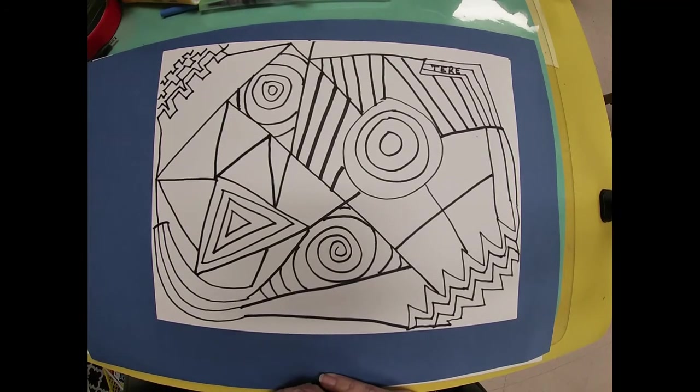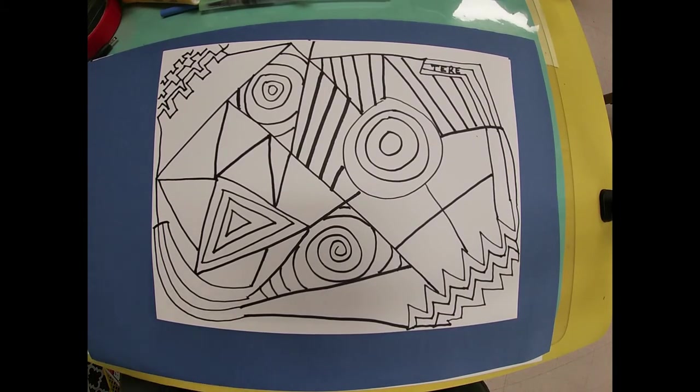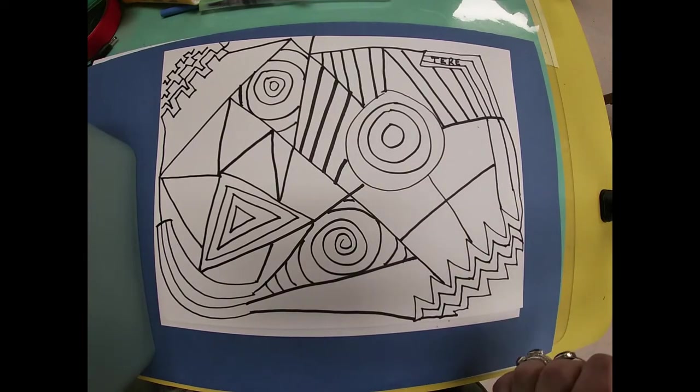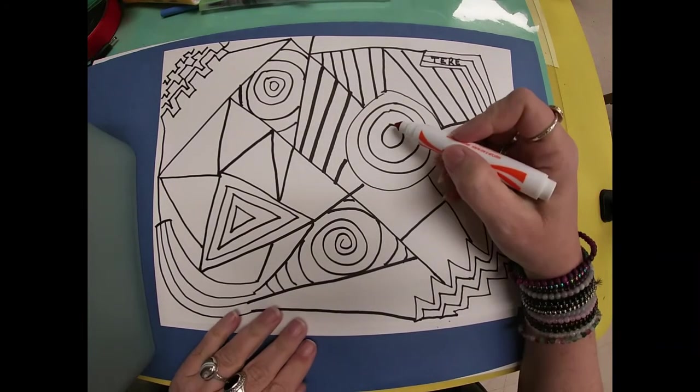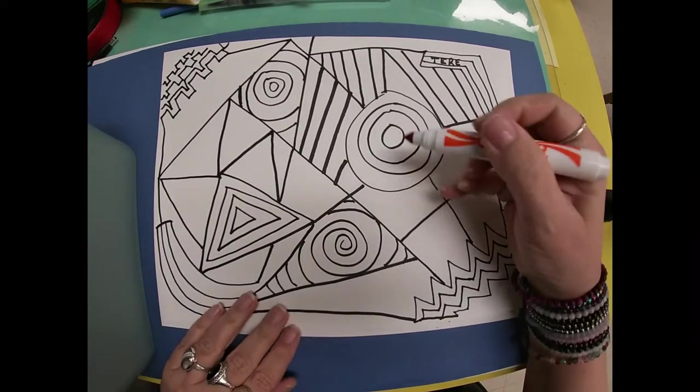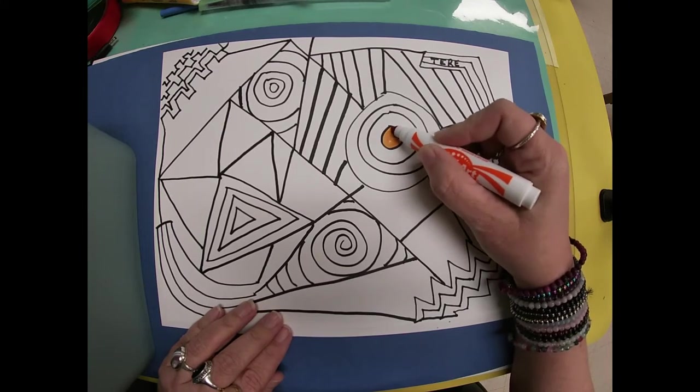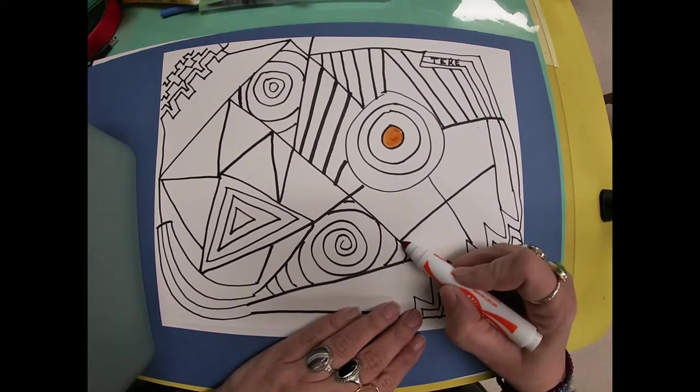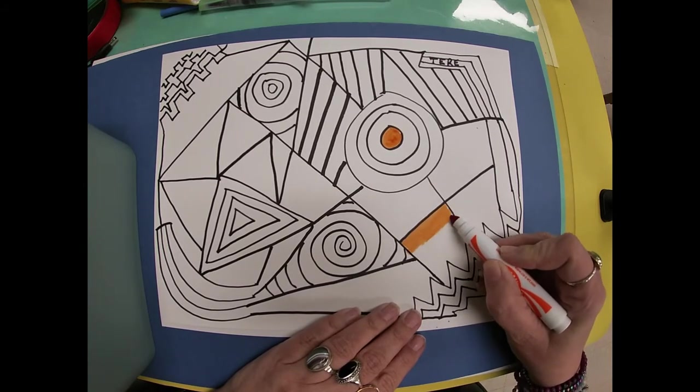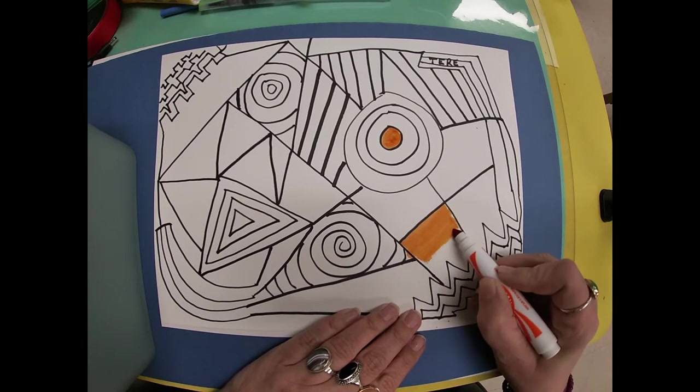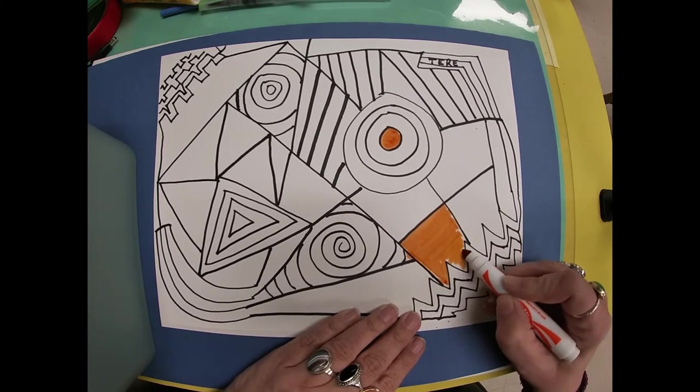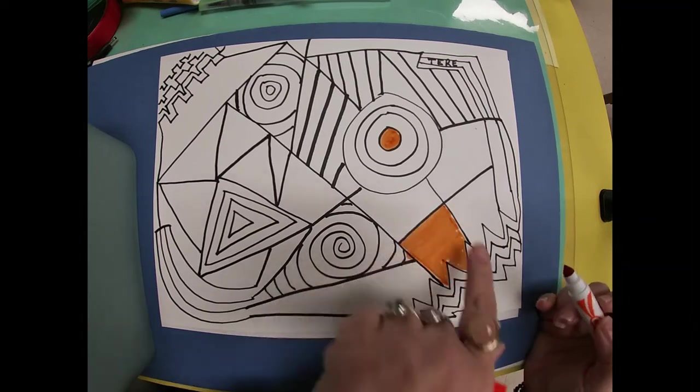So when you start, when you get to the point that you can add color, you are going to use markers. Pick whatever colors you want and then just start coloring things. To keep from having to cap, take off, cap, take off, cap, take off, what we're going to do is color a number of things the same color at one time. So that's going to be orange. Maybe over here might be some orange. And so I'm just going to pick some places where I want to put colors. And I'm going to try to be as neat as I can so that my colors stay in the space I drew.